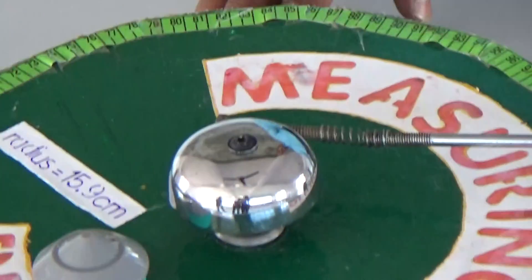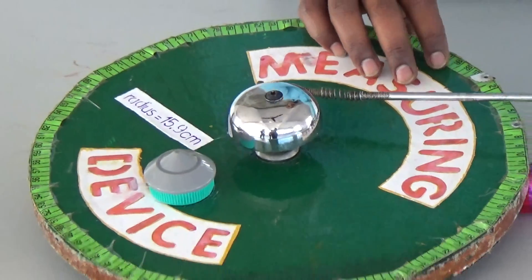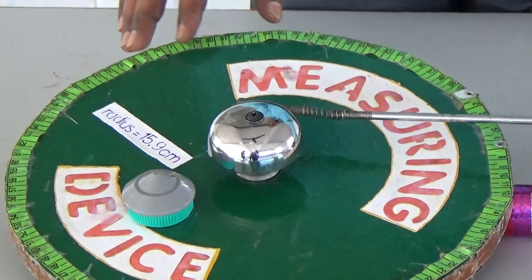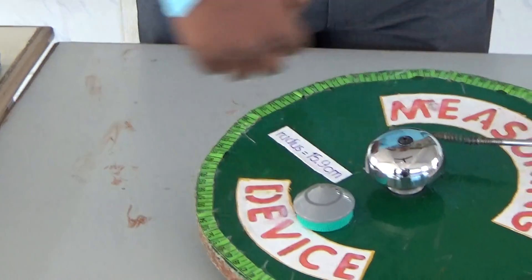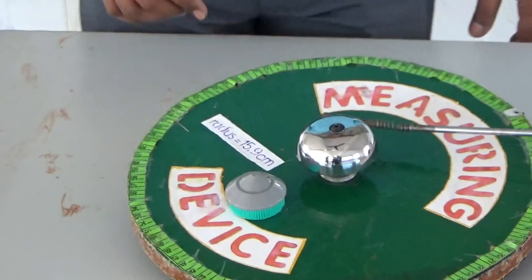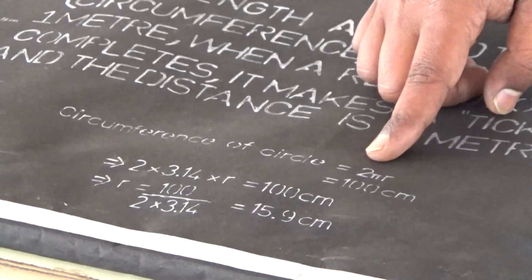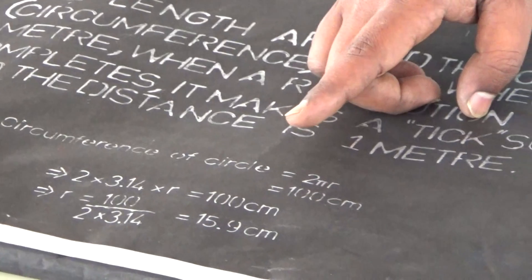Apart from all these, we invented a new measuring device. The basis of making this is: we took a circumference of 100 centimeters. I will show you the formula for circumference — it is exactly one way to be calculated. The circumference of the circle is 2πr.